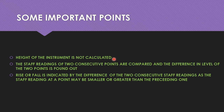The staff readings of two consecutive points are compared and the difference in level of the two points is found out. The rise or fall is indicated by the difference of two consecutive staff readings. After finding the difference, we will get an indication of whether it is a rise or fall, since the staff reading at a point may be smaller or greater than the preceding one.